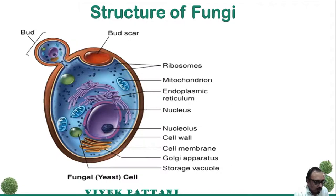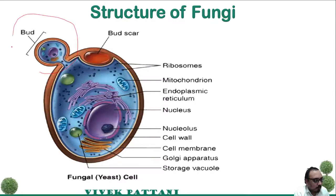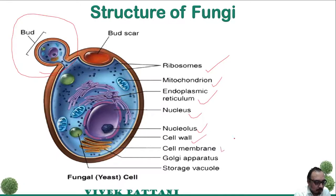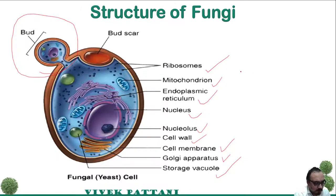The diagram given here is of a yeast, and you can see the cell which is similar to the eukaryotic structure. Here the formation of buds occurs because yeast generally reproduce by means of budding, and it may produce one or more buds. It contains ribosomes, mitochondria, endoplasmic reticulum, nucleus, nucleolus, cell wall, cell membrane, Golgi apparatus, and a storage vacuole. The structure is more similar to that of a eukaryotic cell.